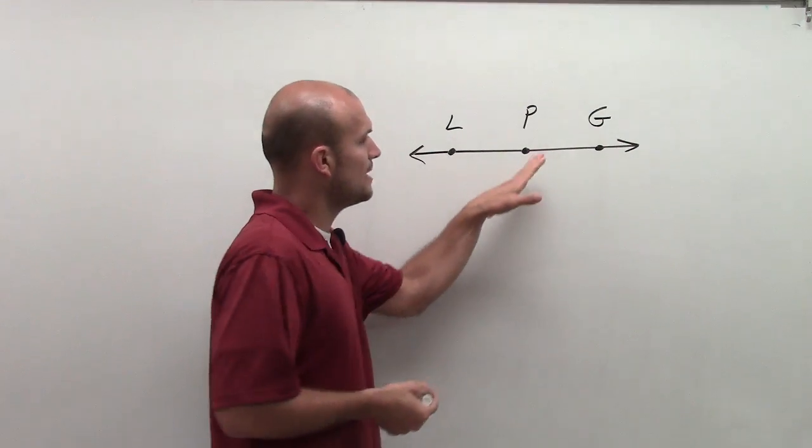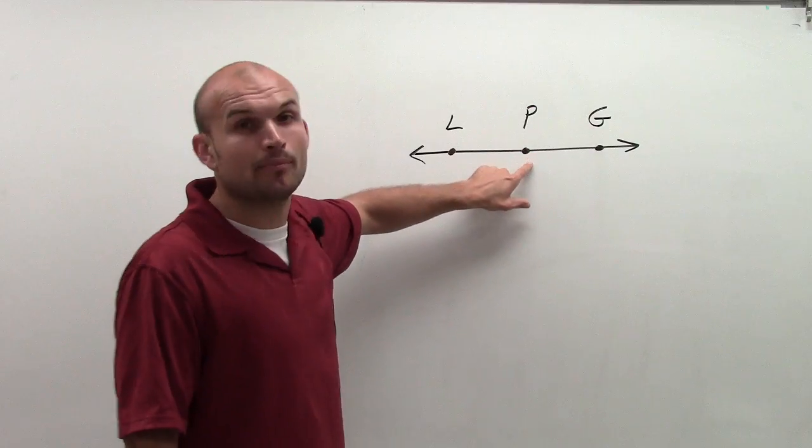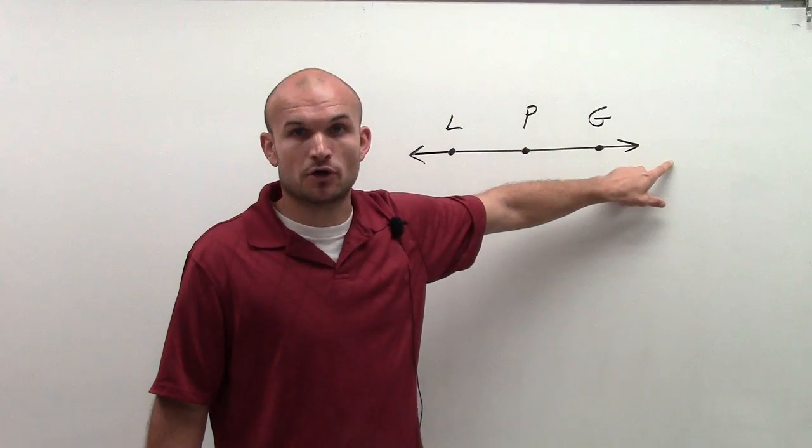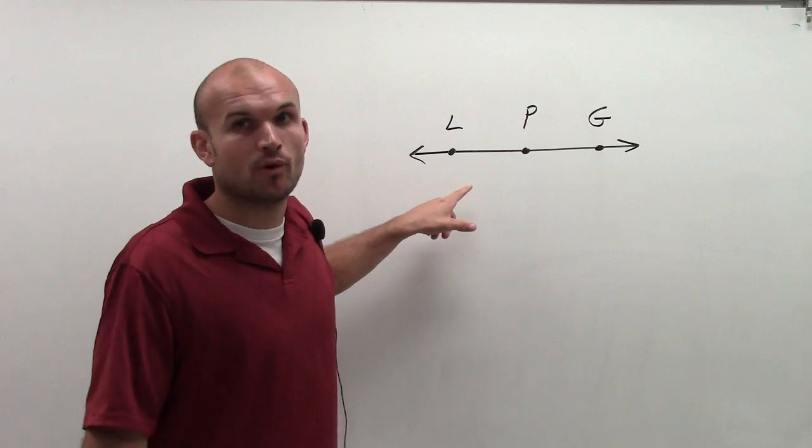So I am going to have my endpoint be P. And the reason being is because if my endpoint P, I can have a ray that goes to the right as it would go through the point G and I'd also have a ray that would go to the left as it would go through point L.